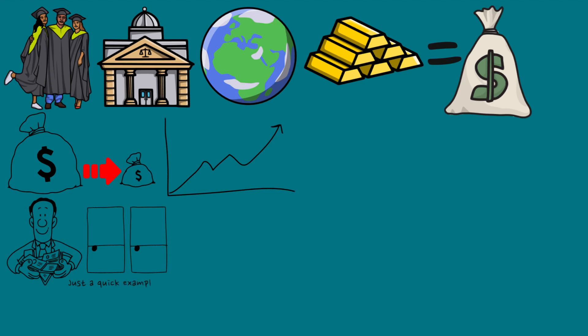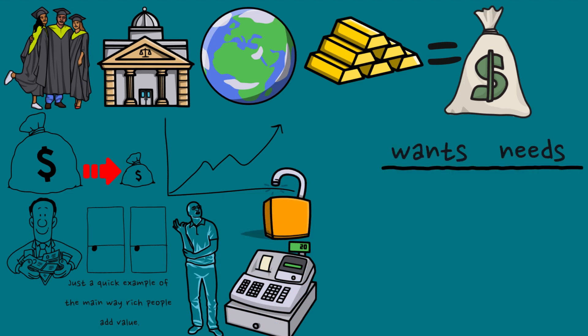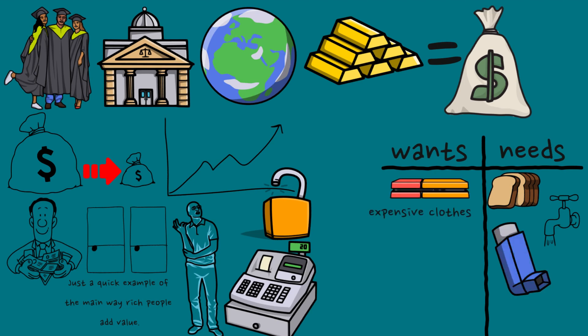Here's an example of the main way rich people add value: they solve other people's problems. Think about it - the majority of stuff you buy solves a problem, usually a want or even better, a need. Develop an effective product that you can mass-produce with large margins that solves a problem, and you will get incredibly far.